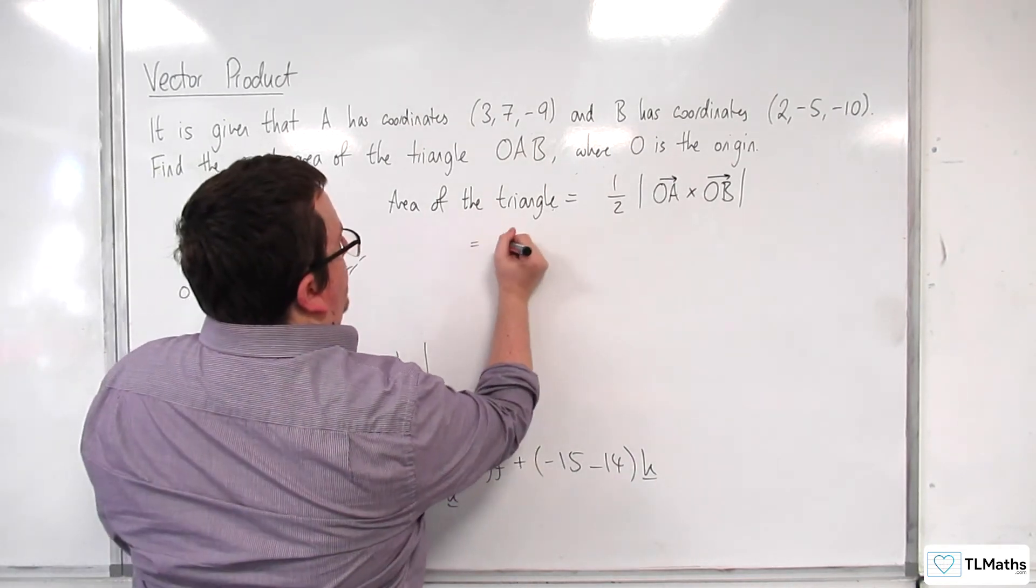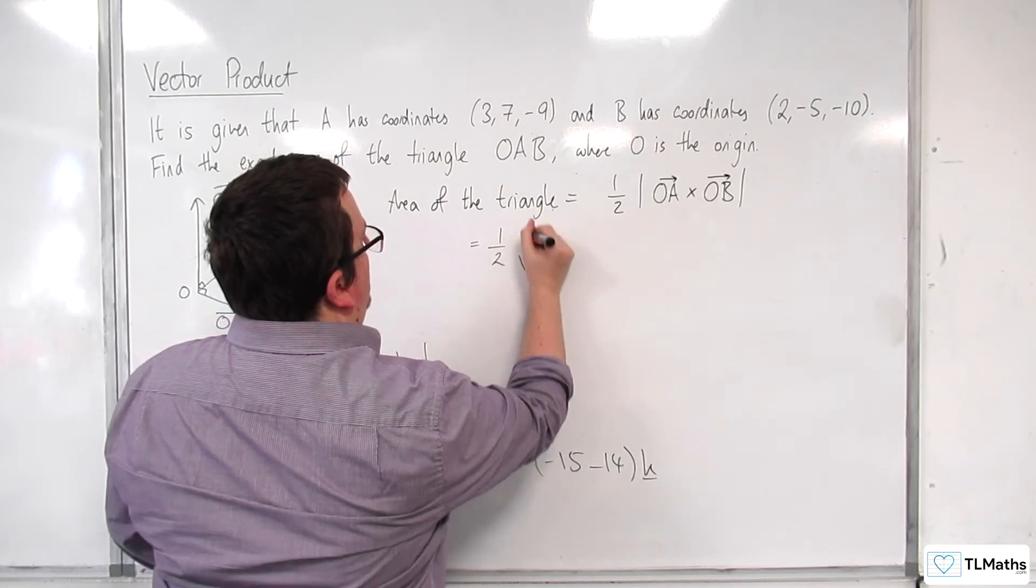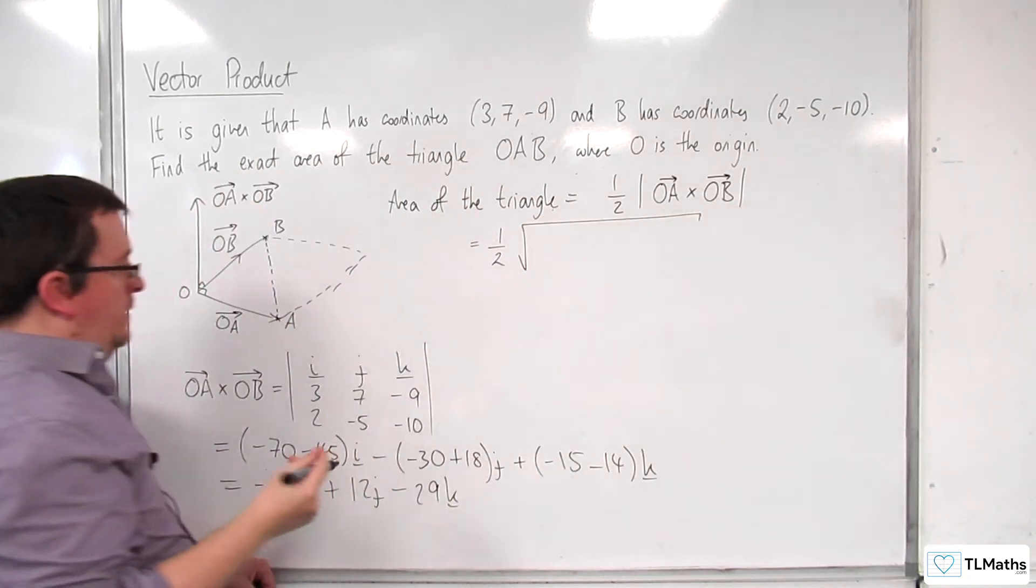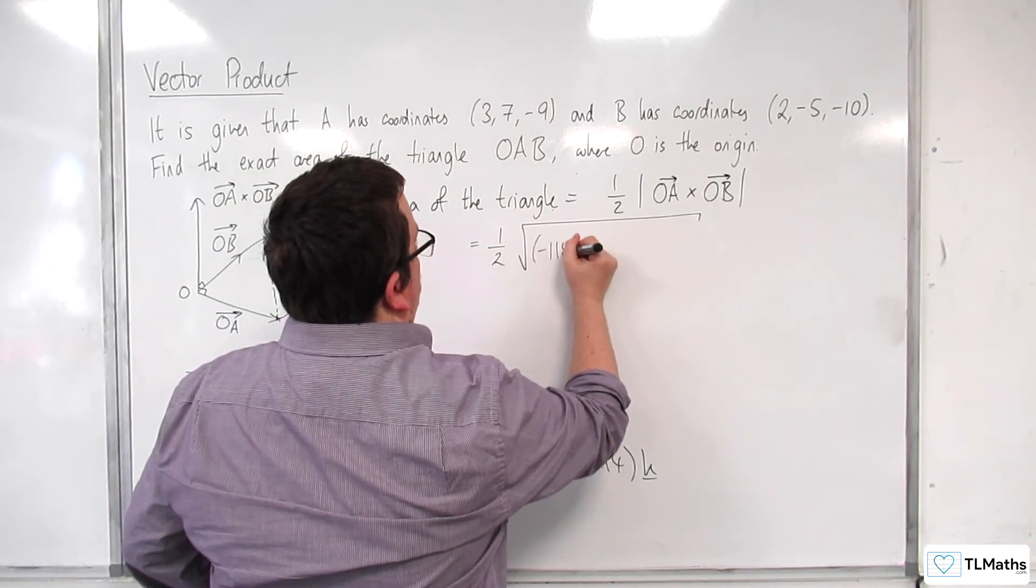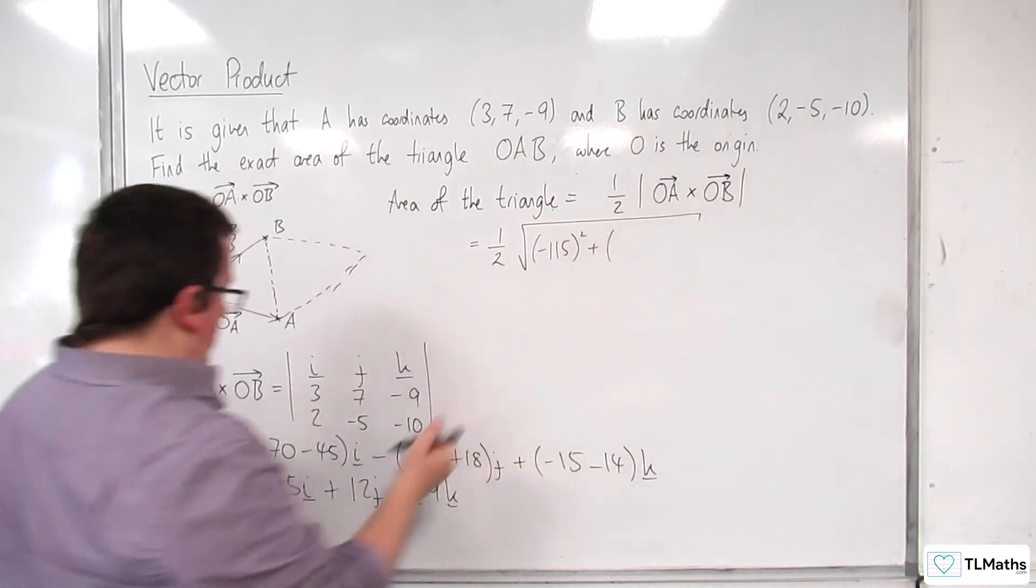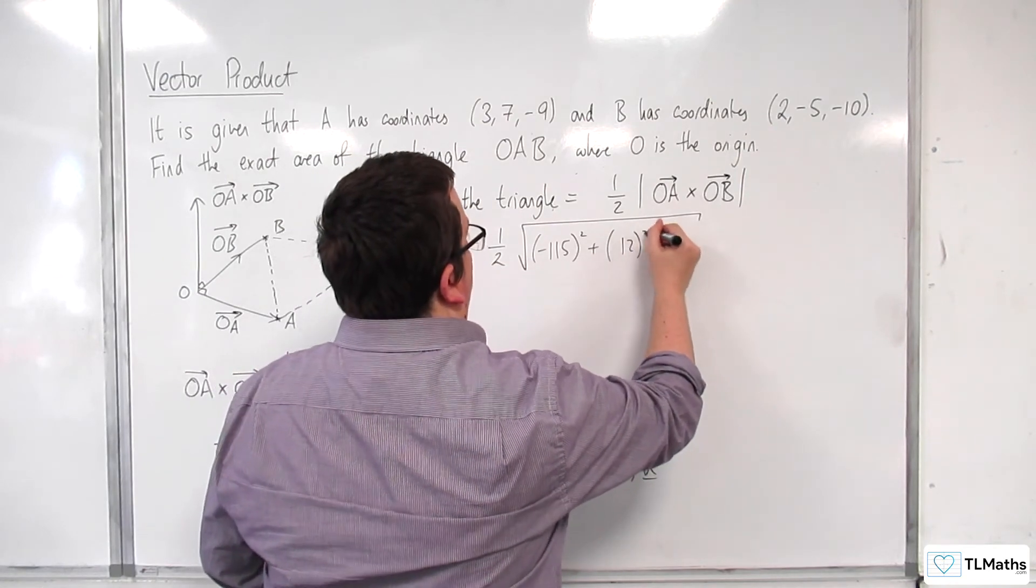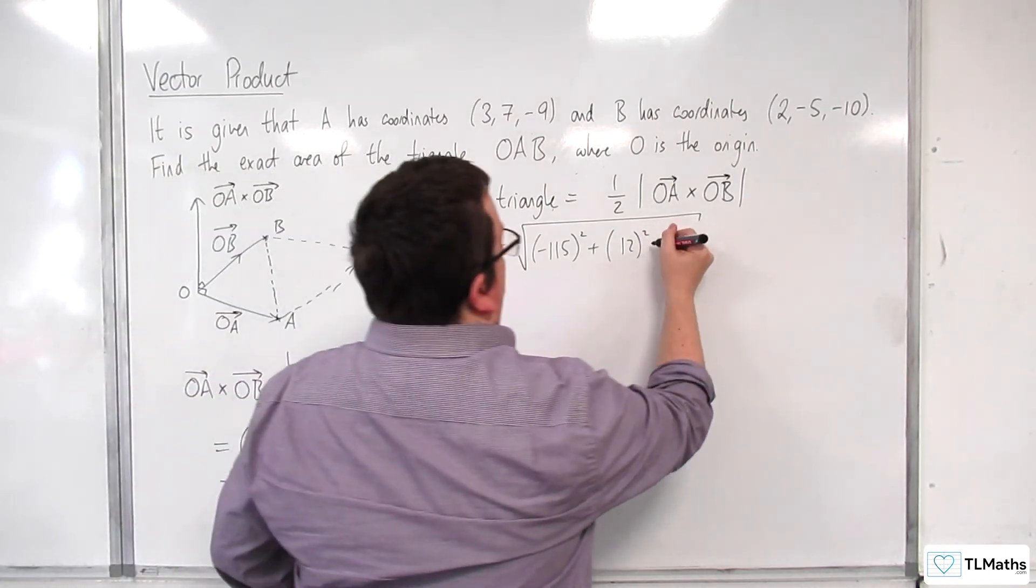So this is going to be equal to one half times the length of this vector. So minus 115 squared plus 12 squared plus minus 29 squared.